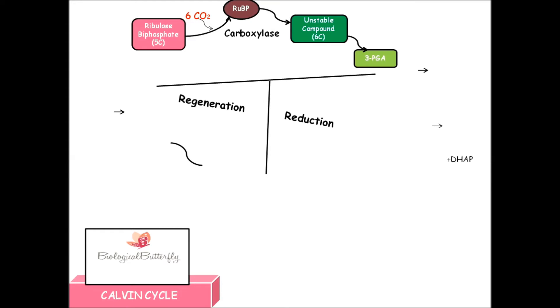This 3-PGA reduces down to 1,3-di-PGA, or 1,3-diphosphoglyceric acid, where one molecule of 1,3-di-PGA gets converted and mixes with some amount of DHAP, or dihydroxyacetone phosphate.